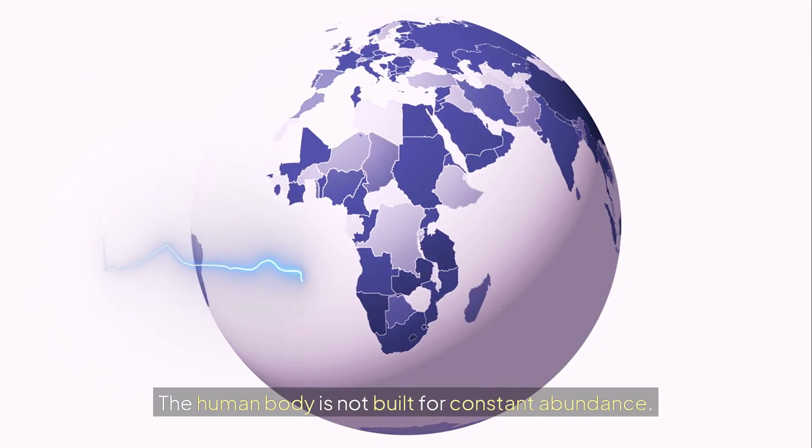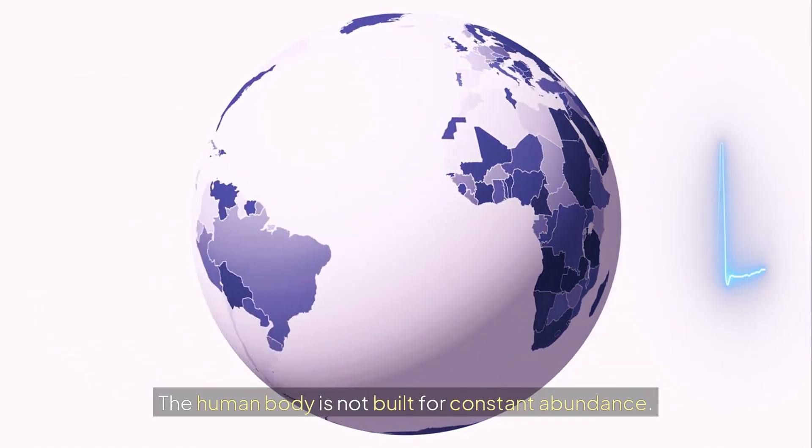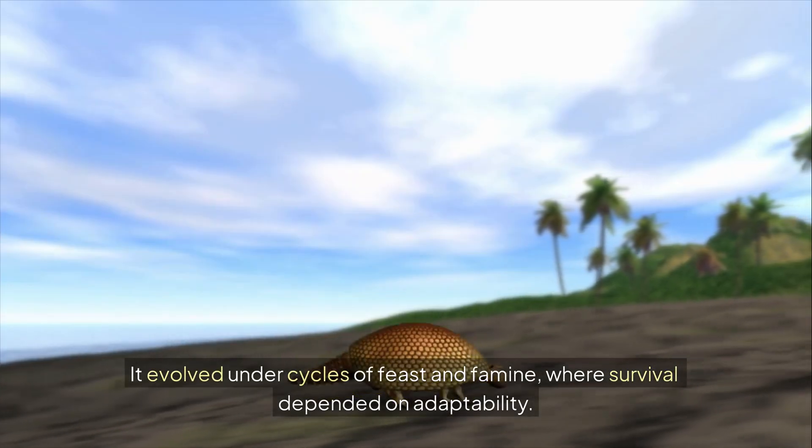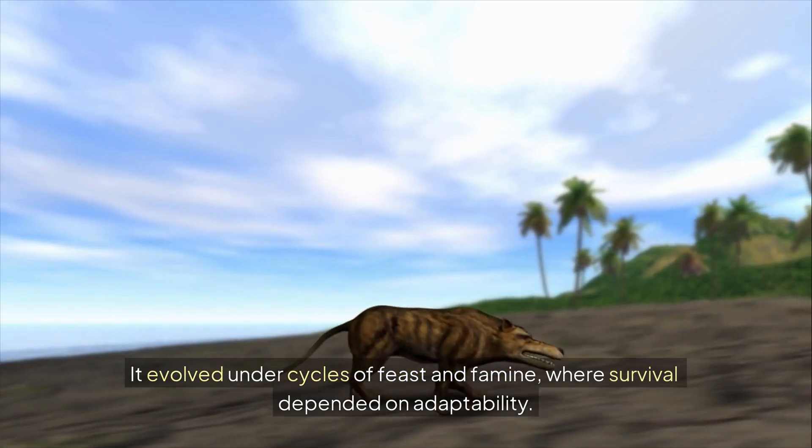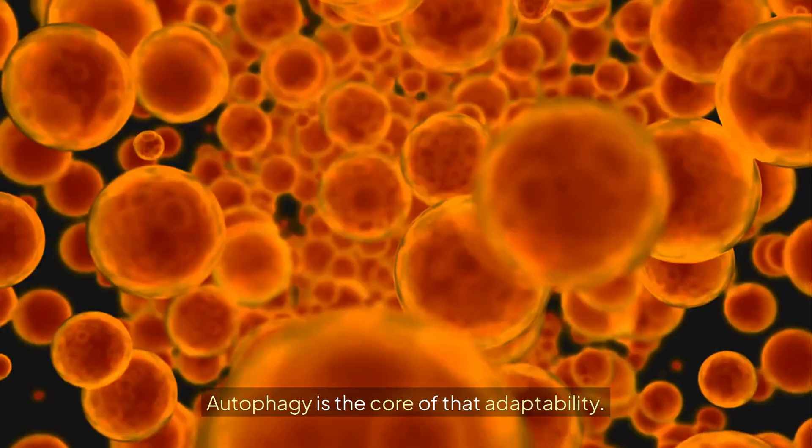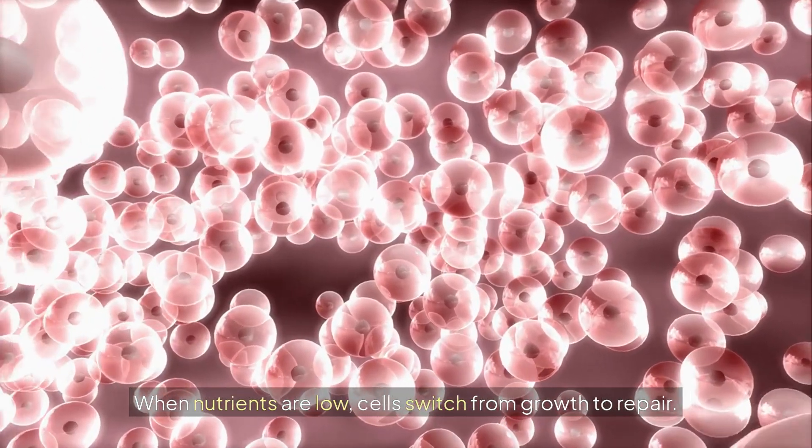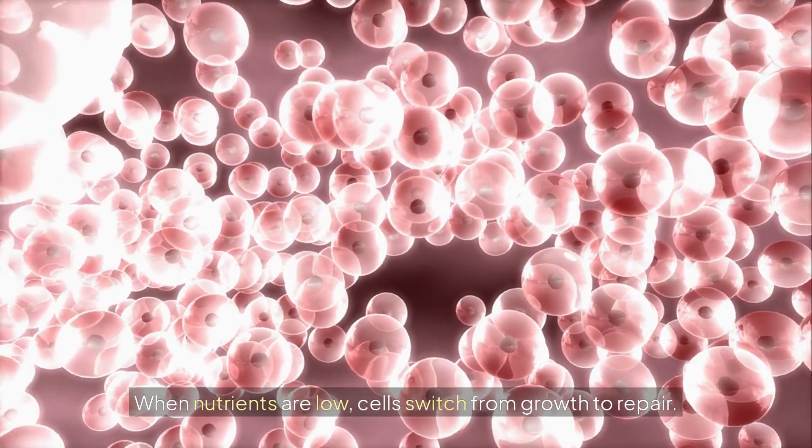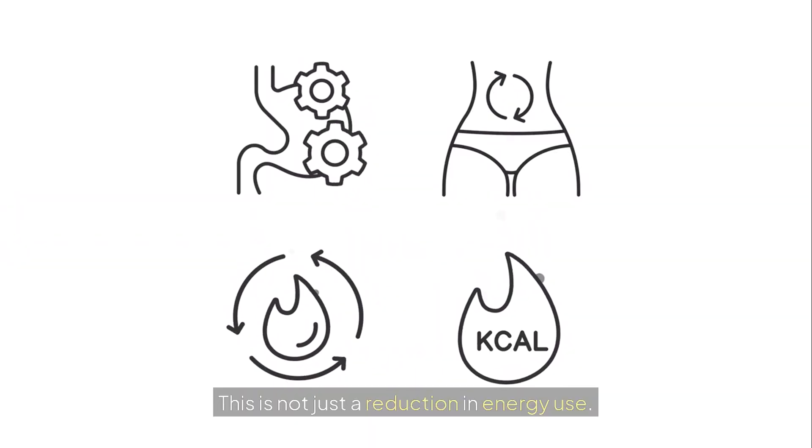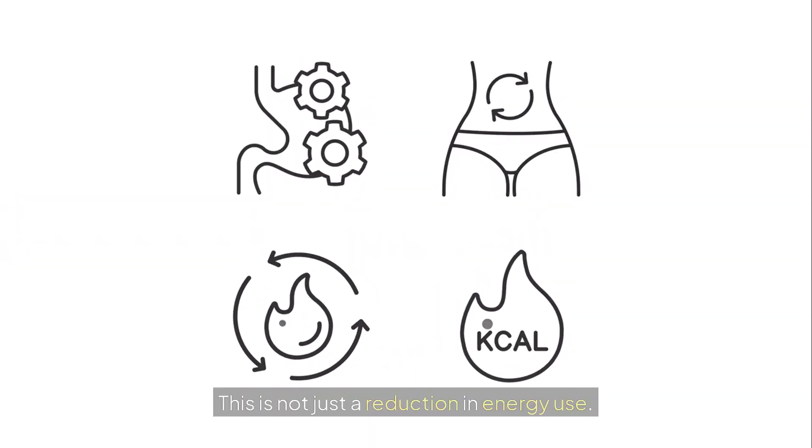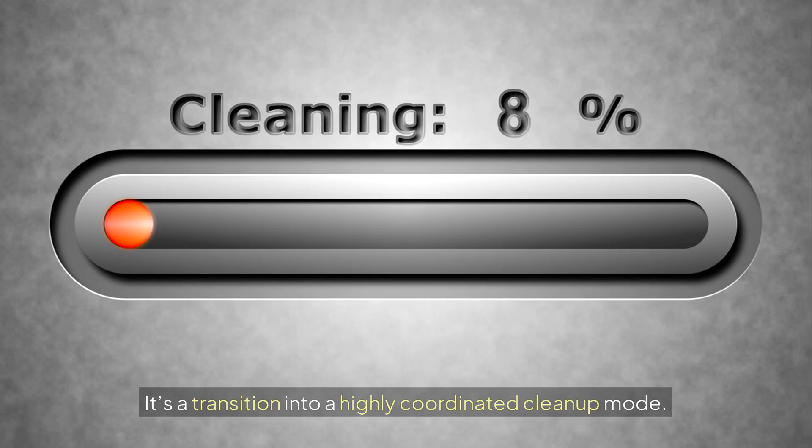The human body is not built for constant abundance. It evolved under cycles of feast and famine, where survival depended on adaptability. Autophagy is the core of that adaptability. When nutrients are low, cells switch from growth to repair. This is not just a reduction in energy use. It's a transition into a highly coordinated clean-up mode.